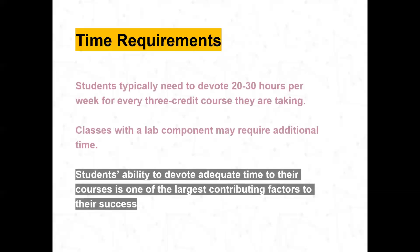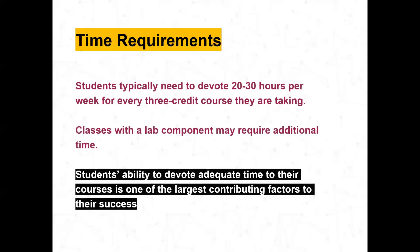Strategies for success. Time requirements: this is a very challenging degree plan because of the extensive application and studying required for math and related coursework. You typically need to devote 20 to 30 hours per course you're taking. Completing classes with a lab component may require additional time. It may be a good idea to take one class at a time, specifically when earning your way into the major, so you can focus on getting the grades you need. Your ability to devote adequate time to your studies will be the largest contributing factor to your success.